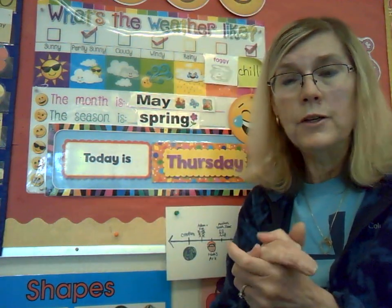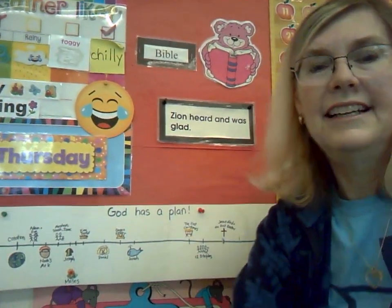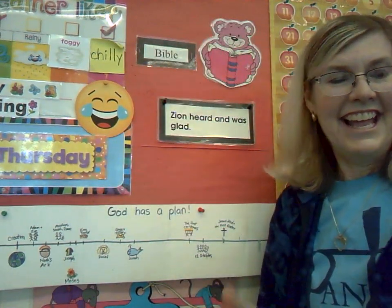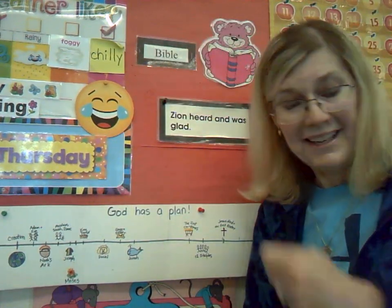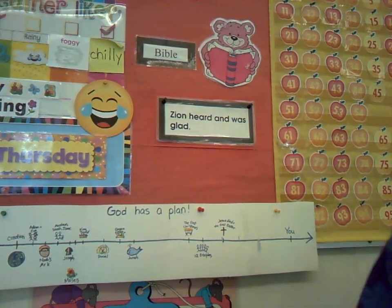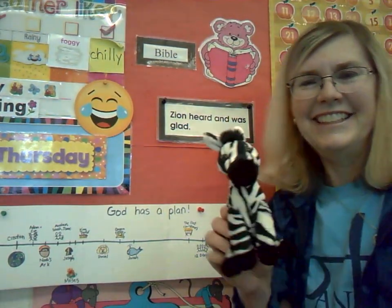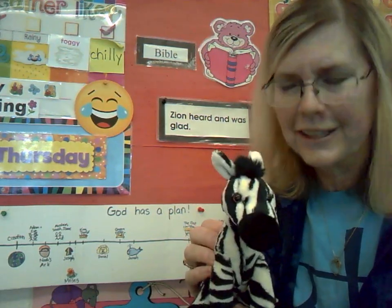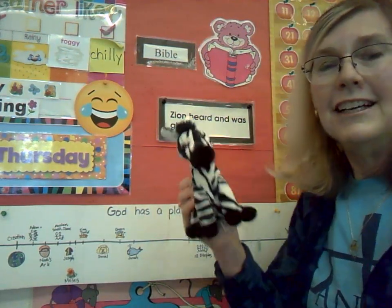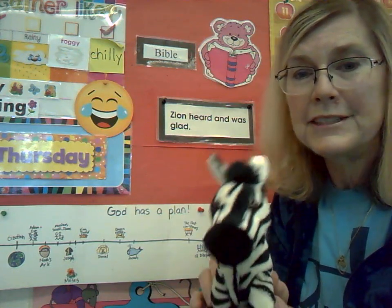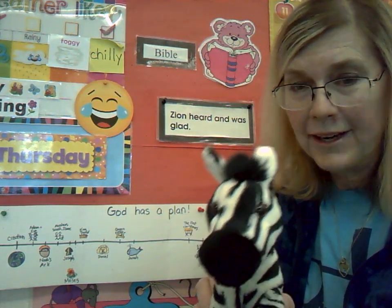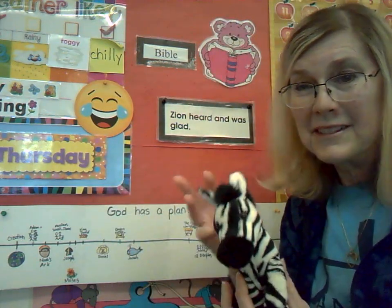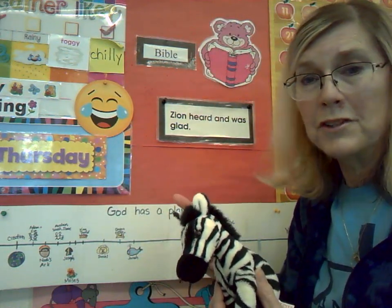I think we are ready to slide over and do the Z-verse. Mr. Zebra, come on up. Z is my favorite letter. I love sitting on the Z on the rug. And I love the Z-verse. Let's read it together, boys and girls, three times — I bet you have it memorized already. We'll point to the words, follow along. Zion heard and was glad. Time number two: Zion heard and was glad.